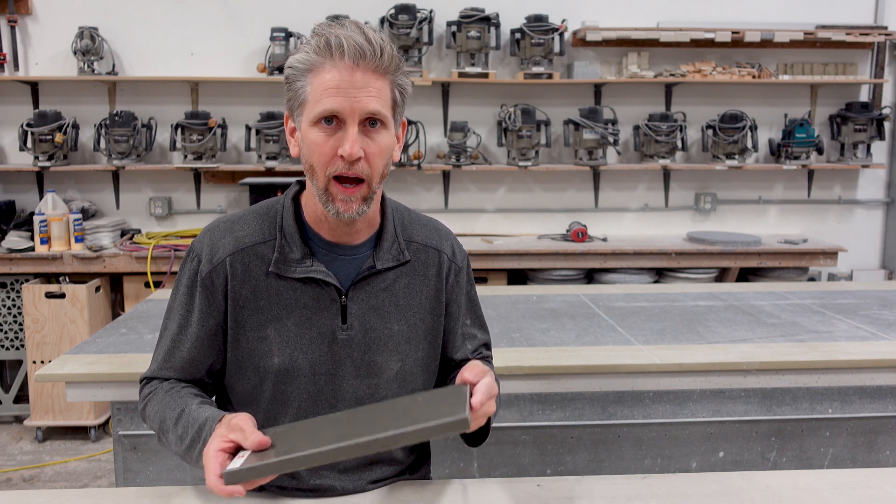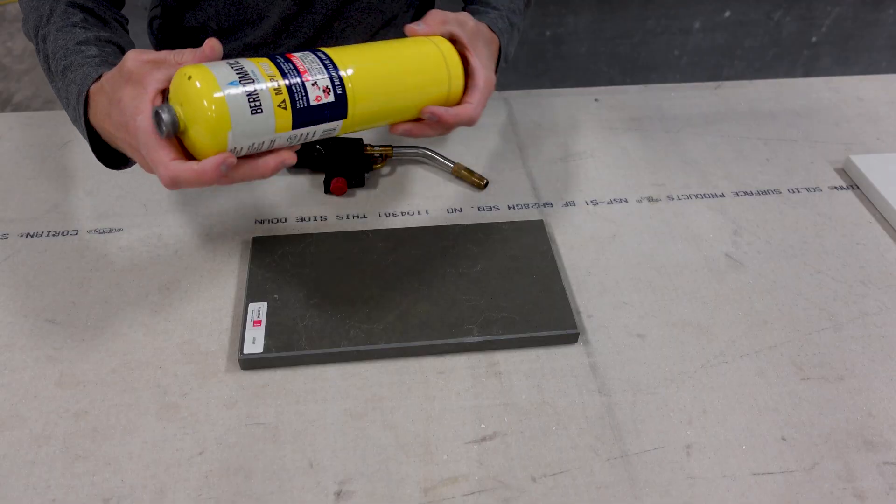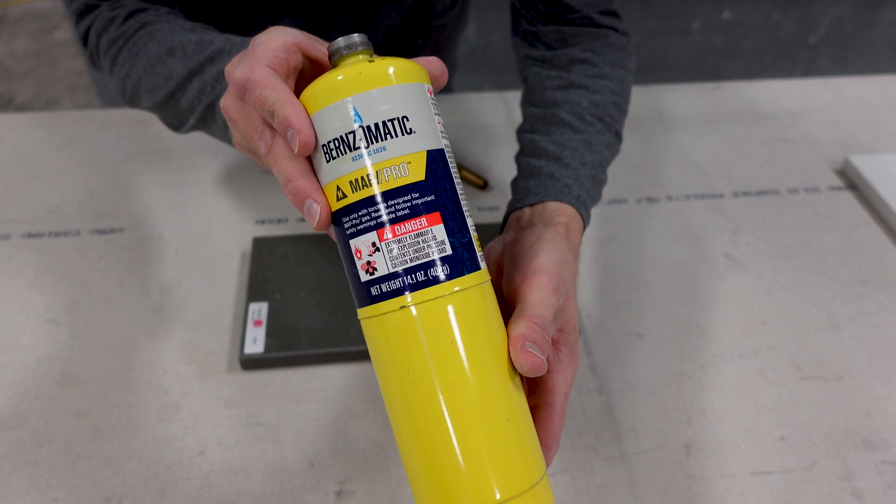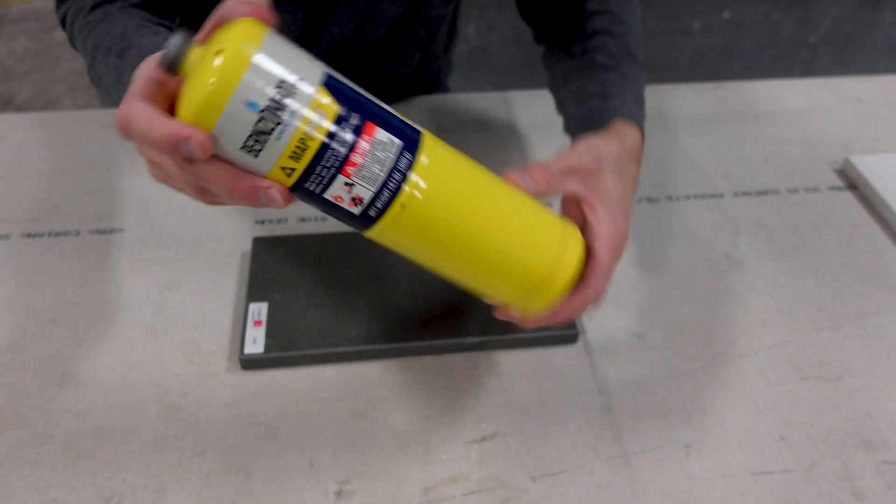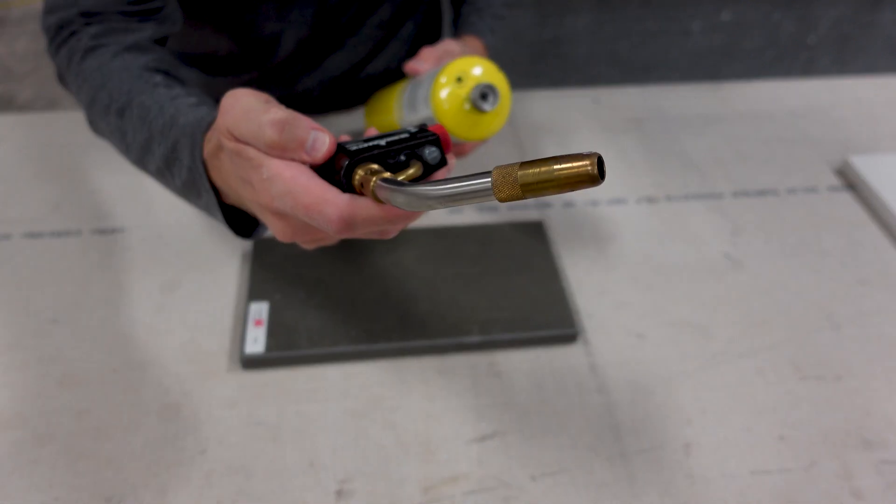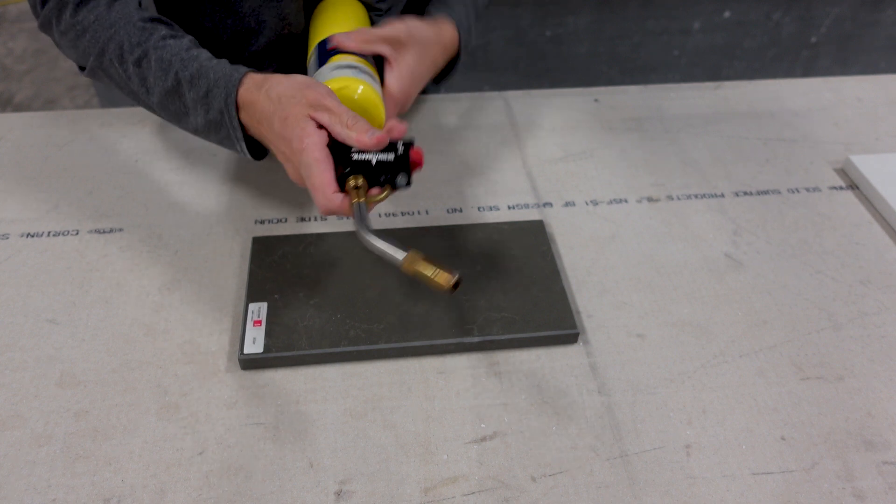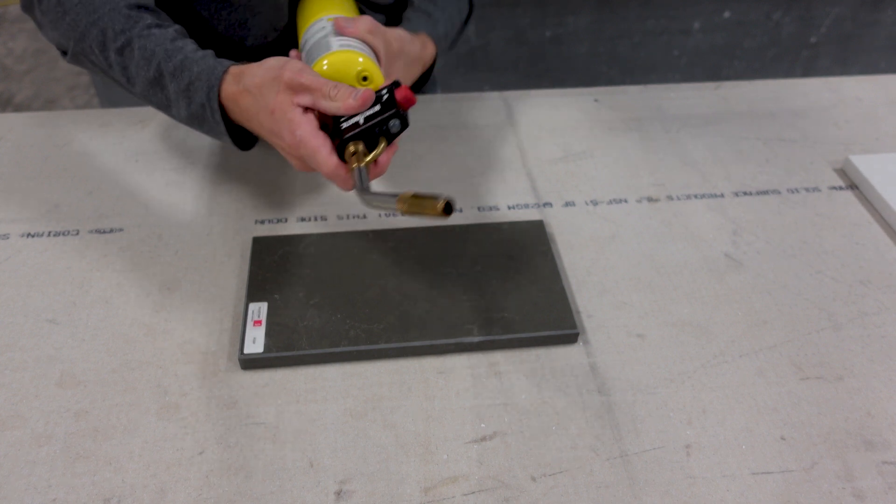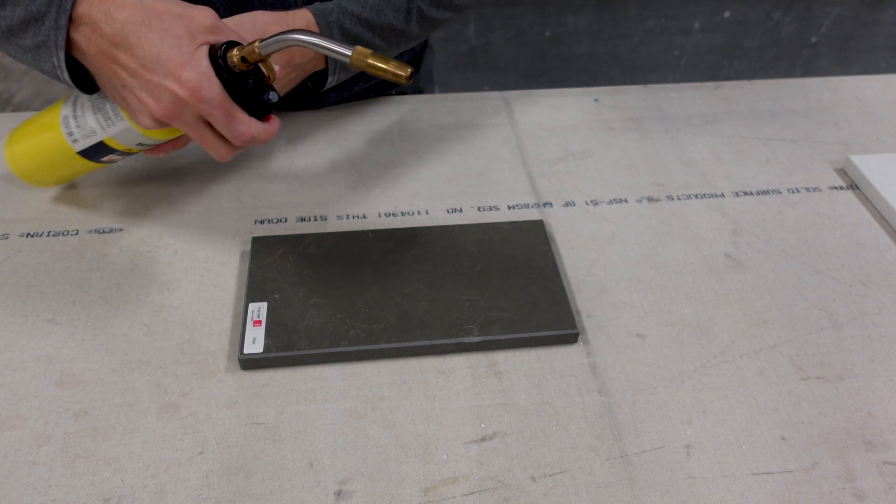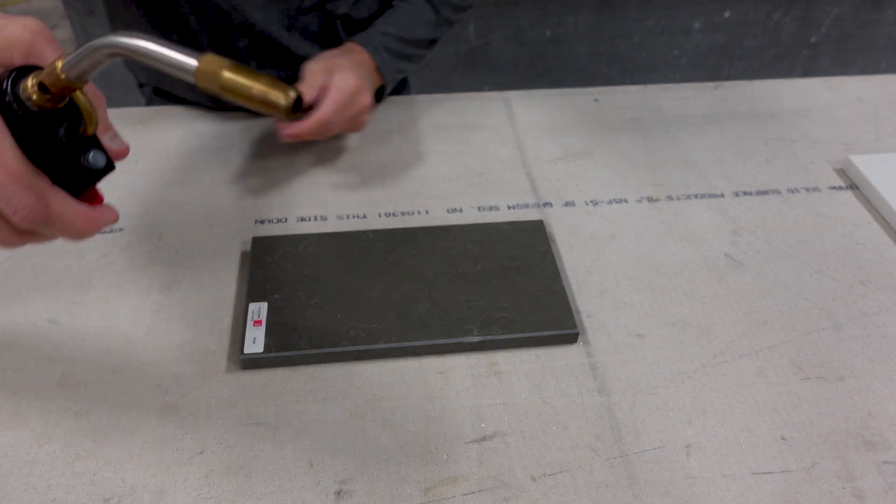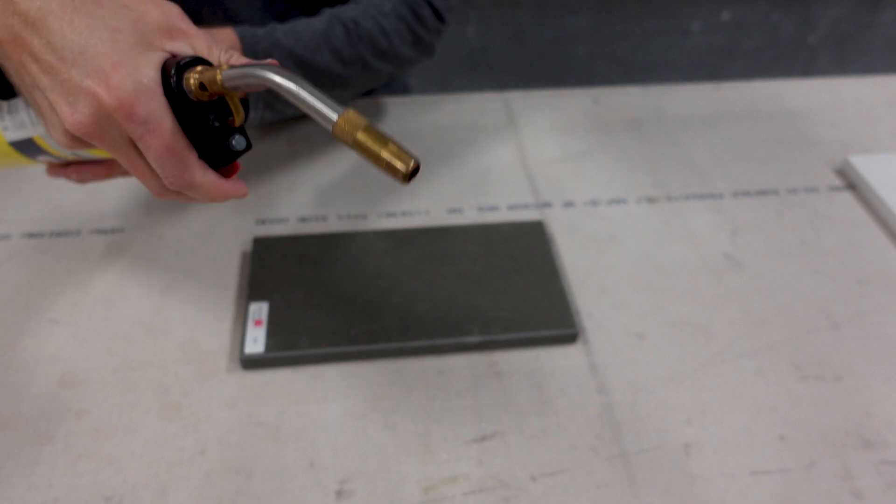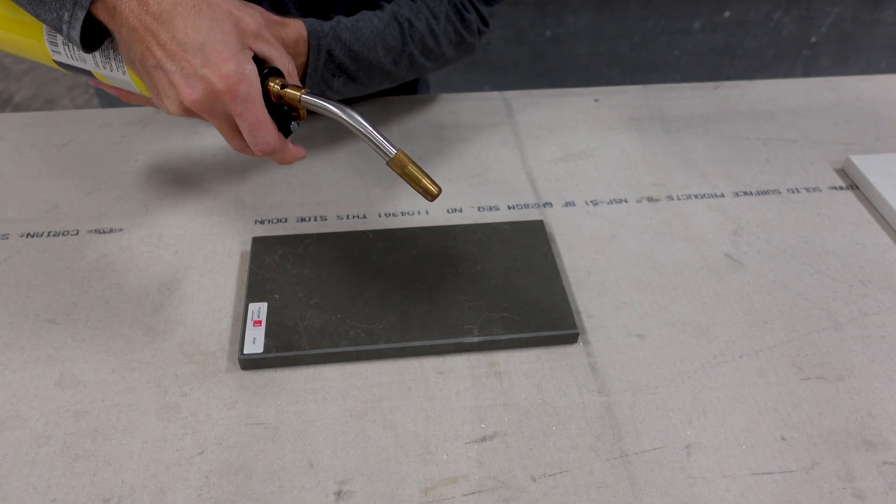Let's get started. We're going to use MAPP gas, which gets extremely hot. We have a torch head. Let me attach it to the canister. I'm going to put it on there for five seconds to start.